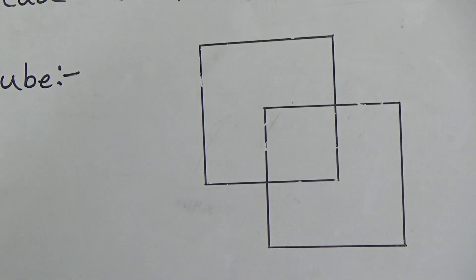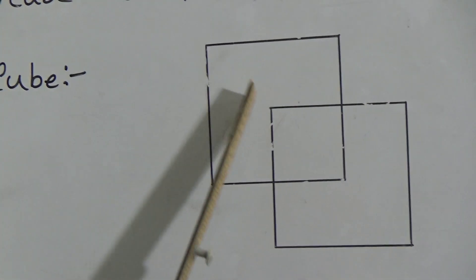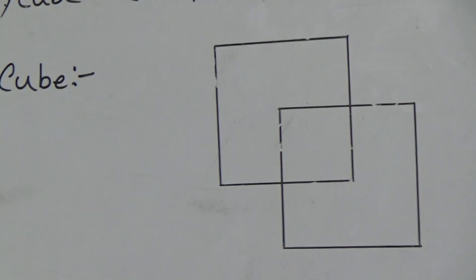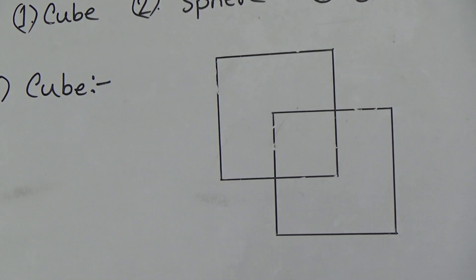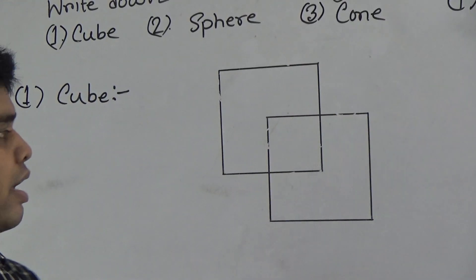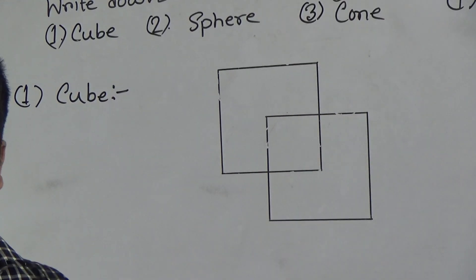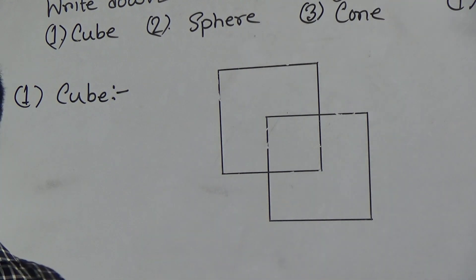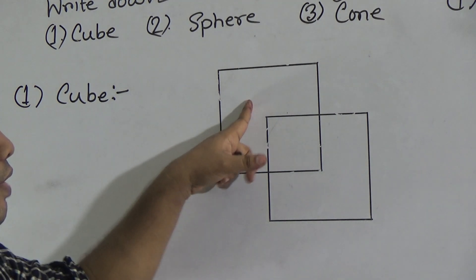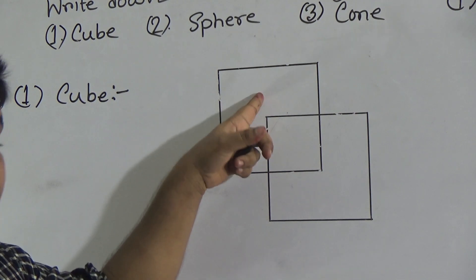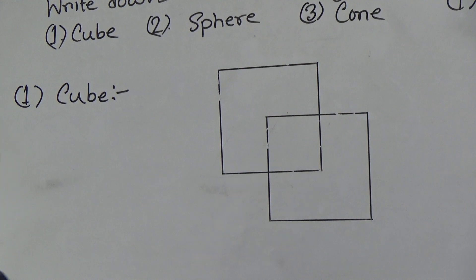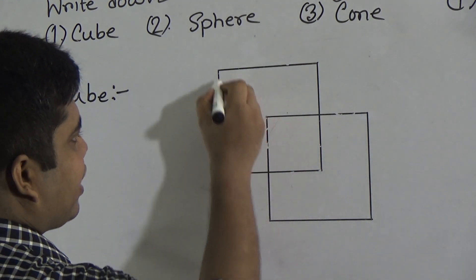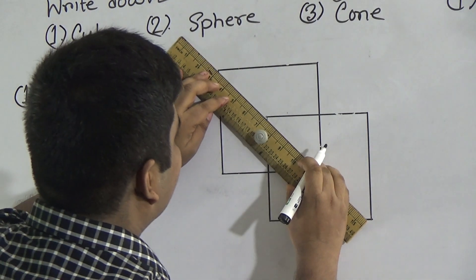My dear students, this is a square and this is also a square. In half-yearly exam we know the shape of a square — a shape which has all sides equal is called a square. So here I draw a square and from the center of the square I draw another square. Now I add the corner points of the square — I add this point with this point.